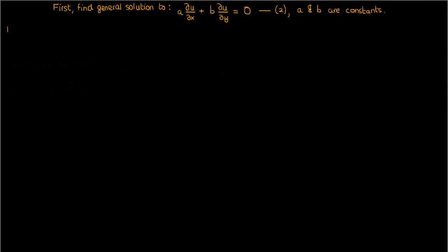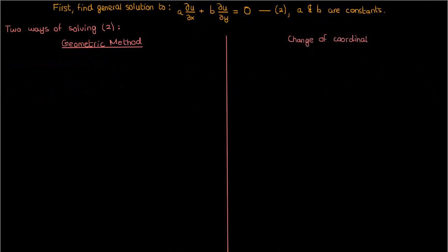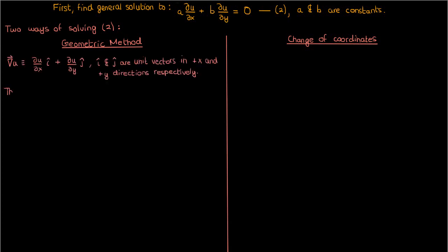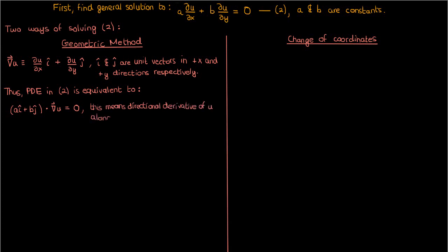There are two ways to find the general solution to this equation. The first way is a geometric method, while the second way involves a change of coordinates. We'll use the two-dimensional gradient operator to say that the PDE in equation 2 is equivalent to the dot product of the vector ai plus bj and the gradient of u. In other words, it's equivalent to saying that the directional derivative of u along ai plus bj is 0.